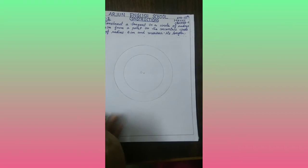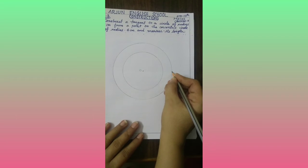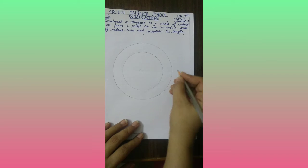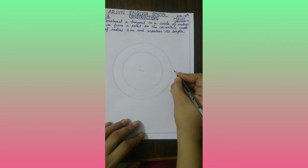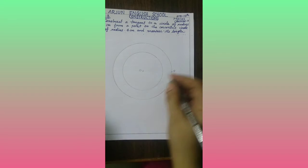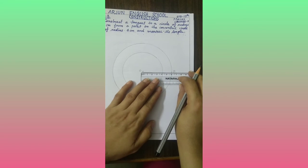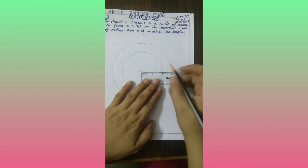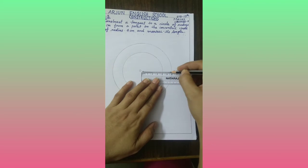Now take one point P on this circle of radius 6 cm. Then draw line segment OP.